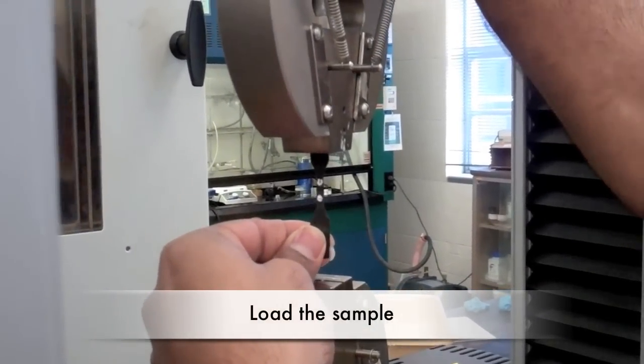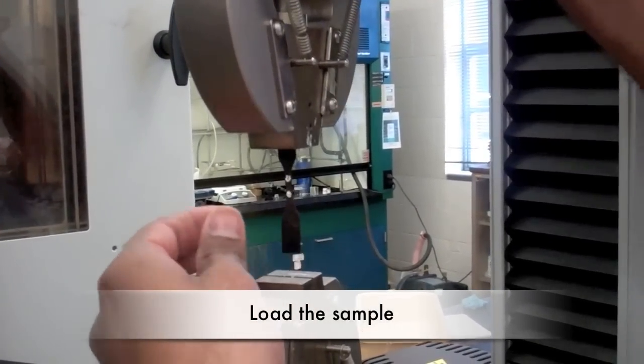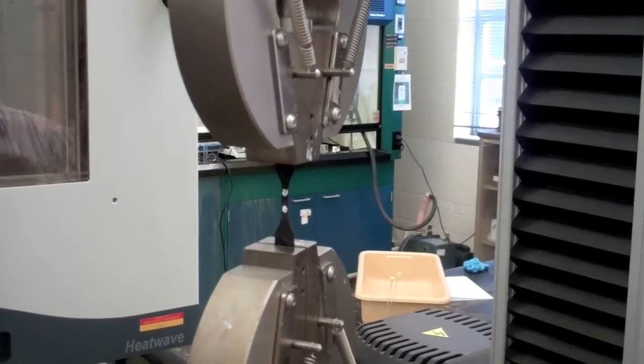Load the sample into the holders, tightening the top clamp first and then the bottom. Eliminate any slack in the sample by using the black roller on the controller.